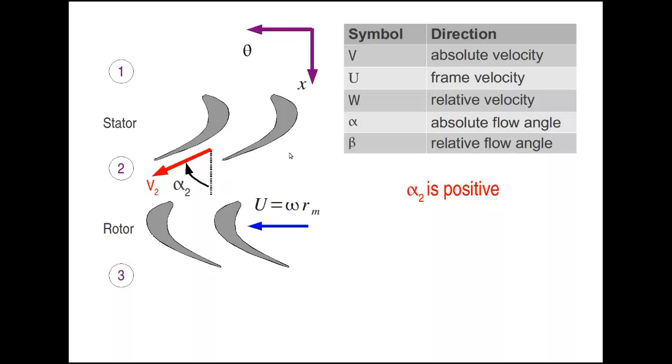By contrast, if we look at the relative velocity W3, we draw the velocity that's lined up with the rotor. Because the rotor is moving, what we see is W3, the relative velocity. The angle beta3 is negative because this turning is in the opposite direction to the direction of rotation. So we have alpha2 being positive and beta3 being negative.